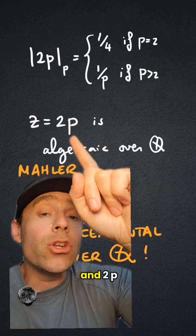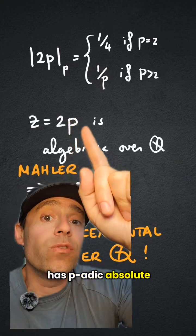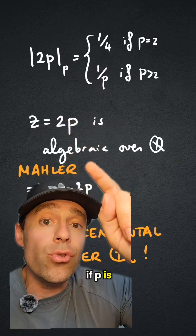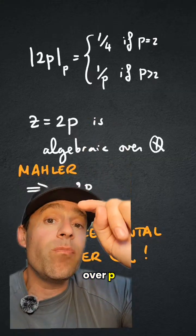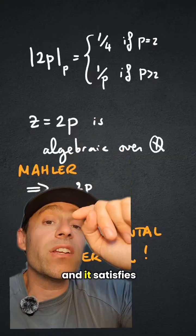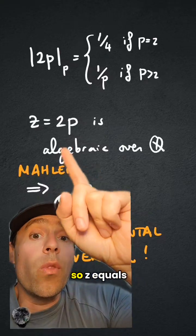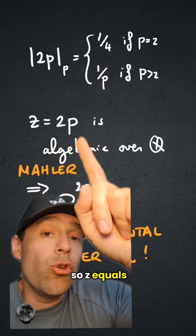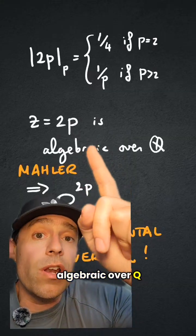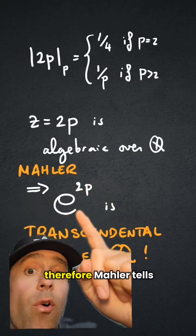So anyway, I can take 2p, and 2p has p-adic absolute value a fourth if p is 2, or 1 over p if p is bigger than 2, and it satisfies the condition of Mahler. So z equals 2p is algebraic over Q, clearly, because it's just an integer.